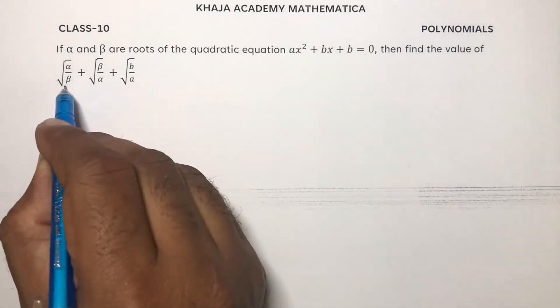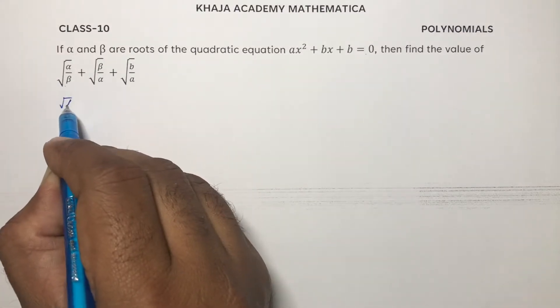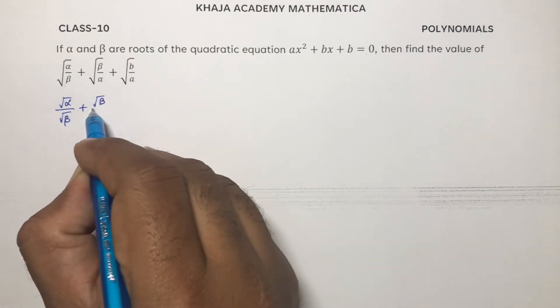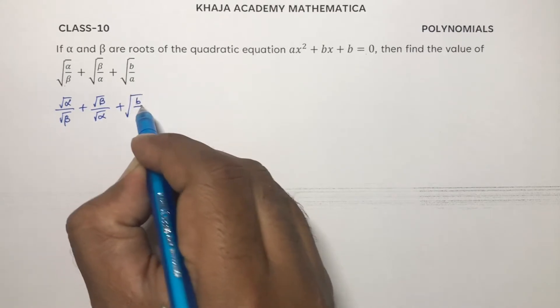In these two terms, you can write root alpha by root beta plus root beta by root alpha plus root b by a.